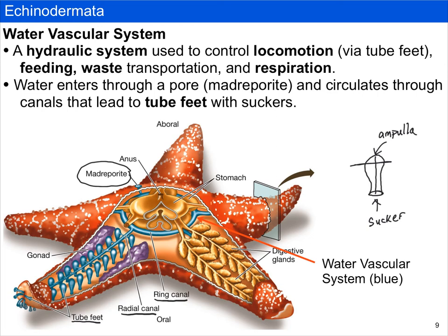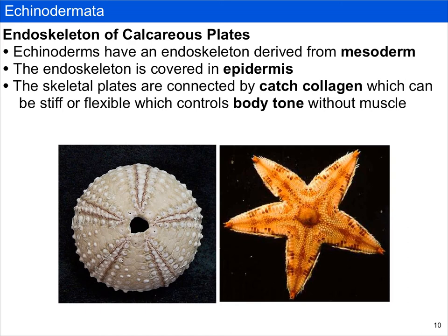Echinoderms also have an endoskeleton made of calcareous plates derived from mesoderm and covered by the epidermis. Just as our bones are connected by collagen in ligaments and tendons, the plates in echinoderms are connected by a special kind of collagen called catch collagen, which can be either stiff or flexible. This is controlled via the nervous system, not by muscles, so echinoderms can control their body tone without the aid of muscle.